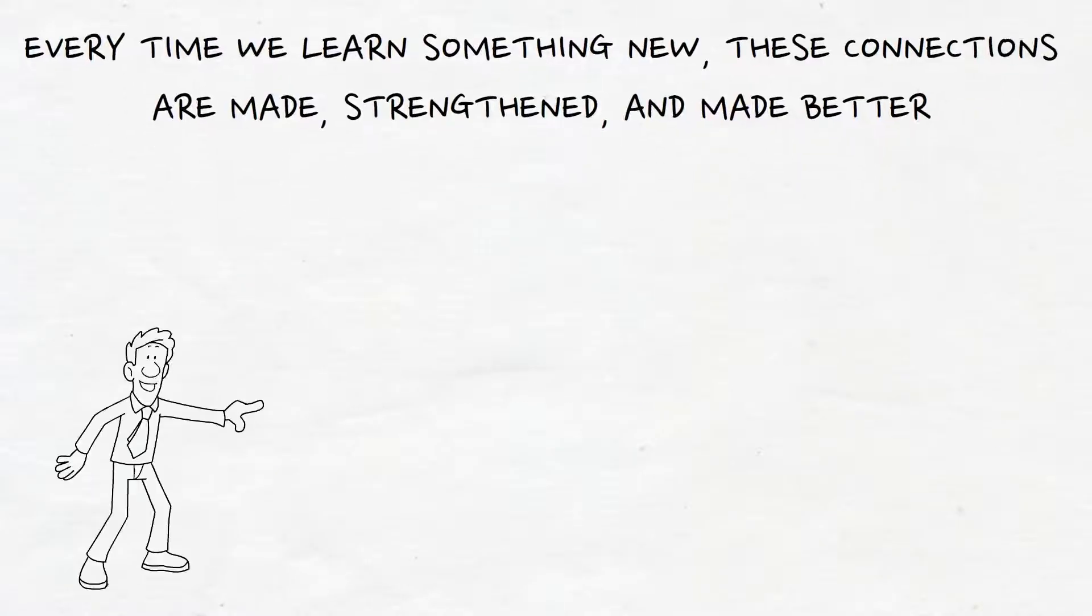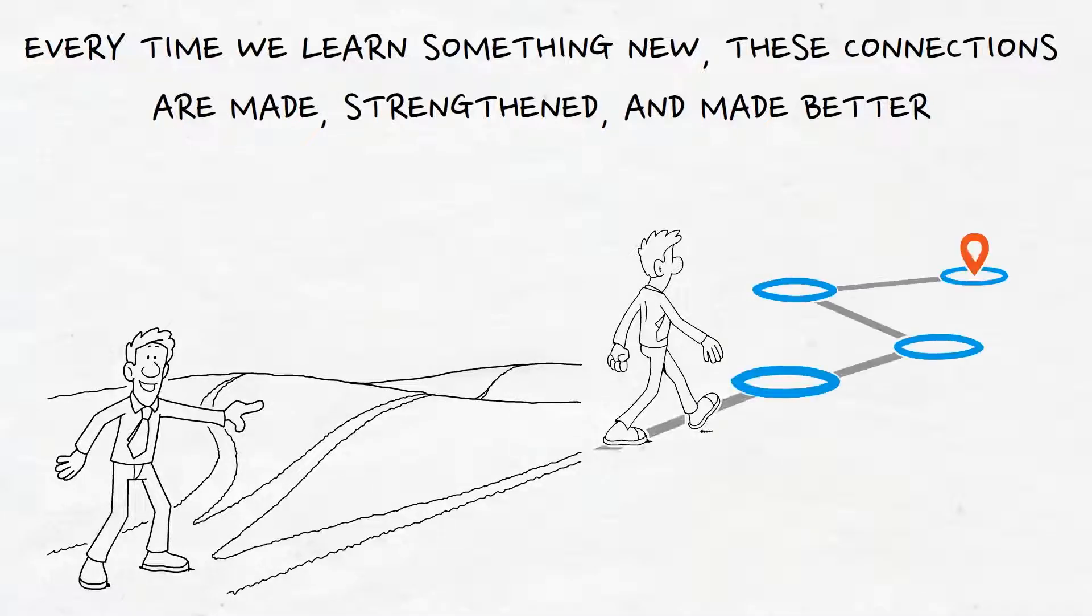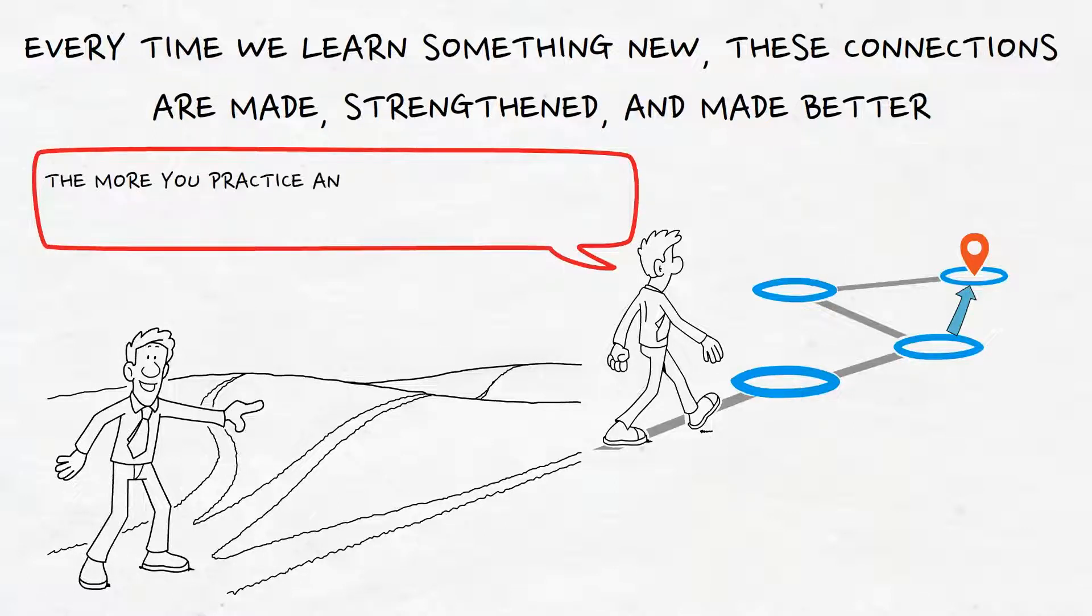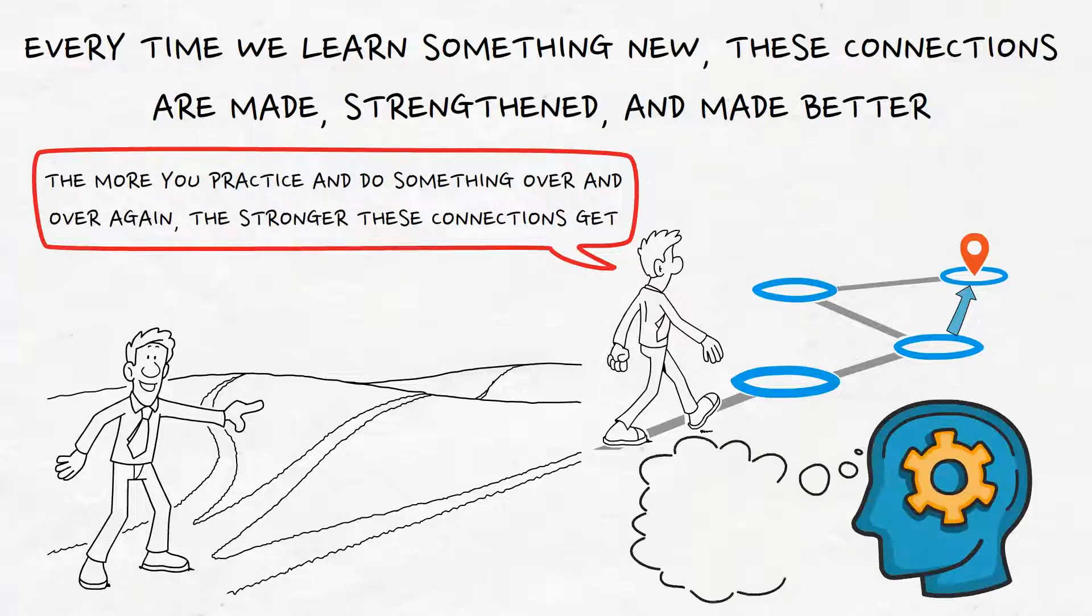Think of your brain as a huge system of roads. As you learn, you make new links, which makes it easier for information to flow. The more you practice and do something over and over again, the stronger these connections get. This makes it possible to get better at skills and abilities.